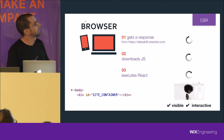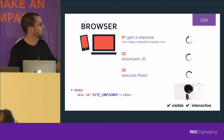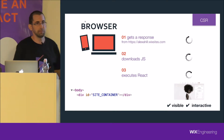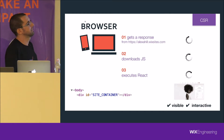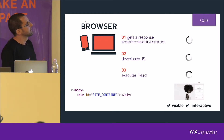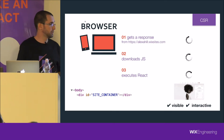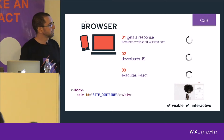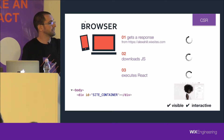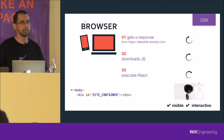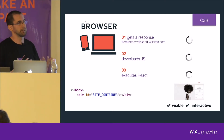Here's the client-side flow. The browser gets a response with an empty div — the actual content is not there. The browser then downloads all the JavaScript, executes React, and then the site is visible and interactive. You can see it, you can click on things, and the application works.